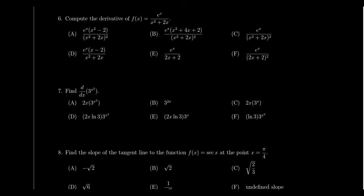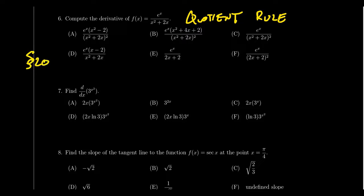Question number six will involve the quotient rule. Here you have to take the derivative of a fraction — e to the x divided by x squared plus 2x. This is the classic "low d-high minus high d-low, square the bottom" rule. You should know the quotient rule and use the mnemonic to help you remember it. The quotient rule was also introduced in lecture 20, right after the product rule.